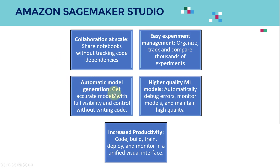The third feature is automatic model generation. You'll be able to generate accurate models with full visibility. What's really good about Autopilot is that you can say, here is my data, please tell me which model I should use. SageMaker's AutoML feature will train a series of models with different algorithms and tell you which is the best one and why — including which algorithm and hyperparameters were used. It's not a black box — there's a full report associated with it, which is extremely powerful.